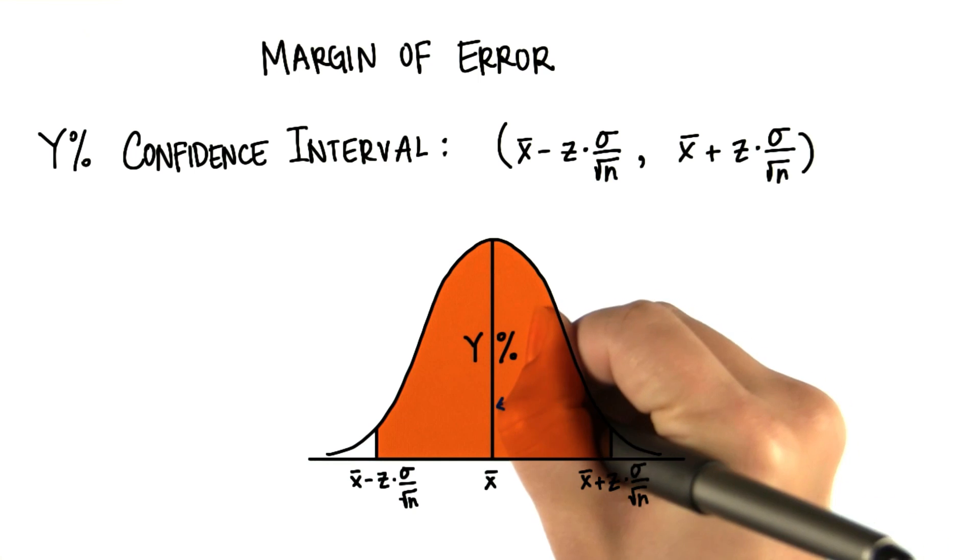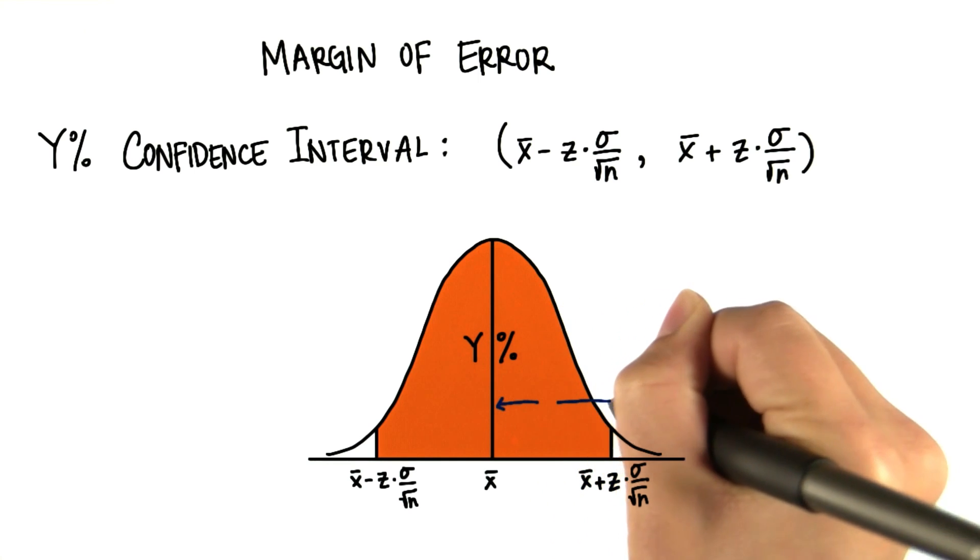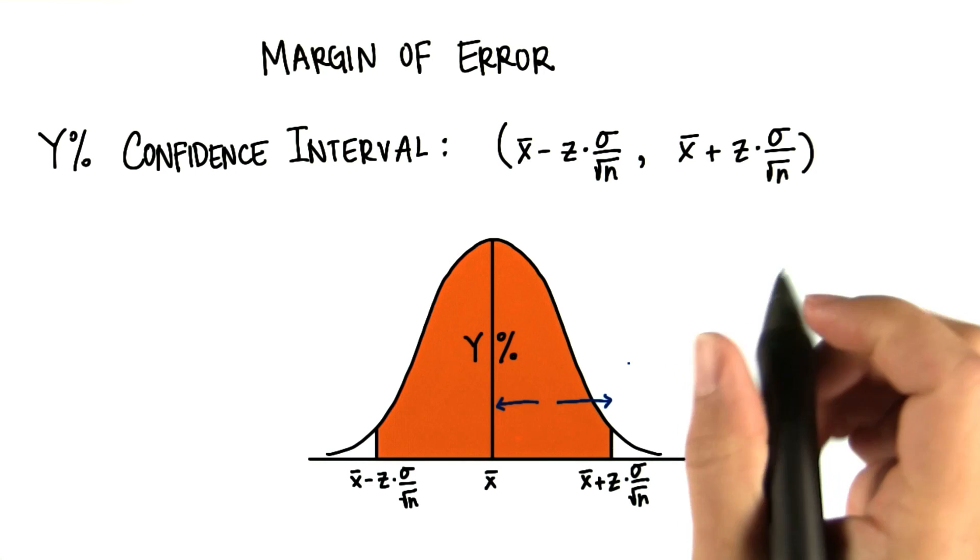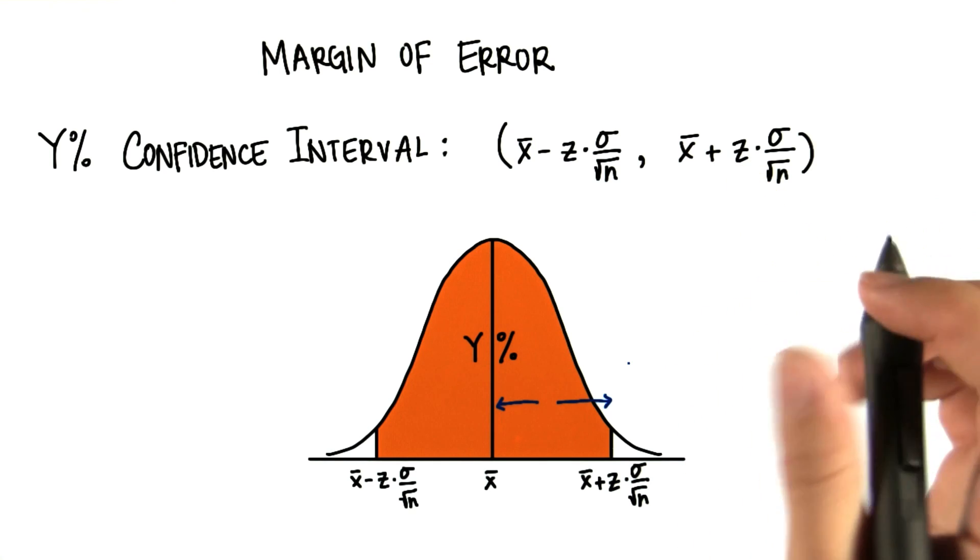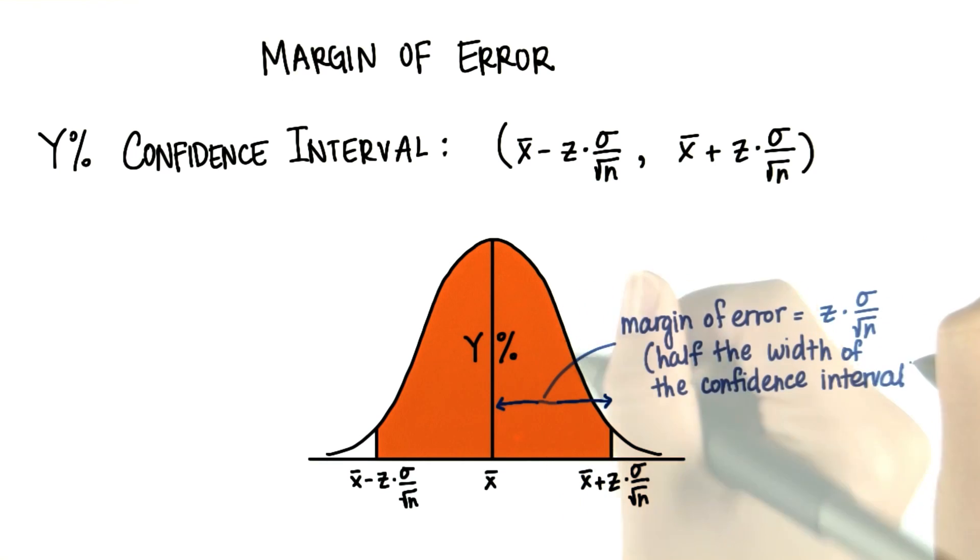The distance that we go away from x bar on either side is the margin of error. And as you can see, that's equal to z times sigma divided by root n. And that's half the width of the confidence interval.